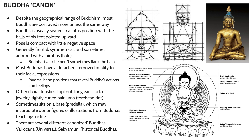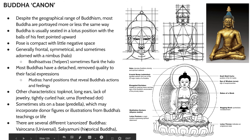There are several different canonized Buddhas represented in art. The two you should probably be most aware of are the Vairochana, or universal shining-sun Buddha — a kind of gigantic cosmic-power Buddha — and then the Sakyamuni Buddha, which is a representation of Siddhartha Gautama.